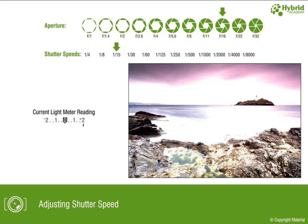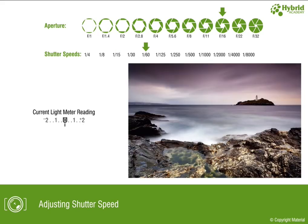In the next example, the light meter shows a reading of plus 2, meaning the picture is overexposed with aperture at f/16 and shutter speed at 1/15. To balance the light meter to 0, we can either decrease the aperture size or increase the shutter speed. After increasing the shutter speed by two stops — from 1/15 to 1/60 — the light meter reaches balanced exposure.